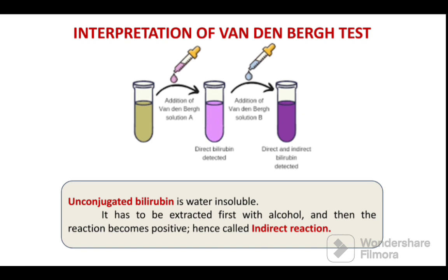If unconjugated bilirubin reacts with Vandenberg reagent, because unconjugated bilirubin is water insoluble, it has to be extracted first with alcohol. Then, when it reacts with the reagent, the reaction becomes positive — that is, the purple color is seen. That is why it is called as indirect reaction.